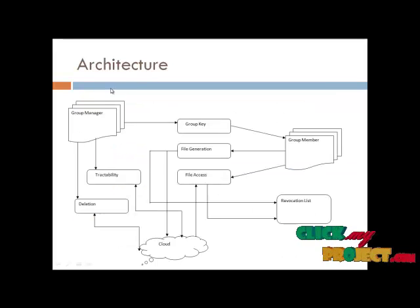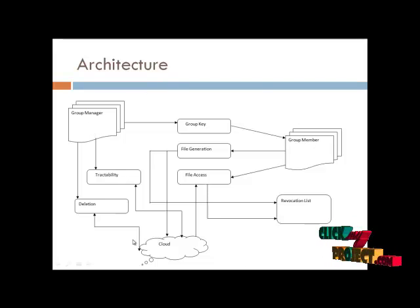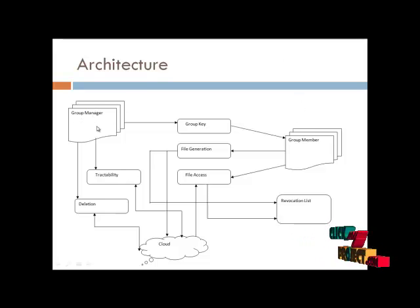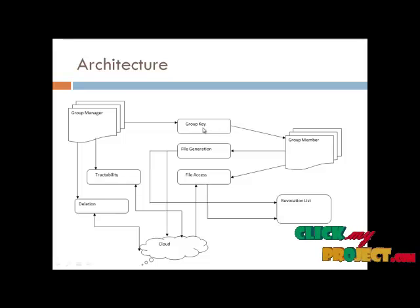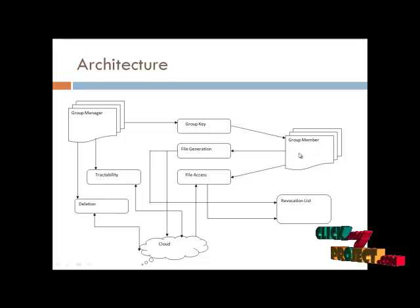Let us see the architecture diagram of MONA. The three components are: group manager, group member, and the cloud — all three activities are dynamically generated. The group manager decides the group key and sends the group key to the group member, assigning them to the group.